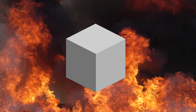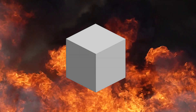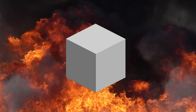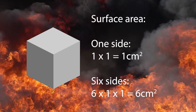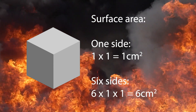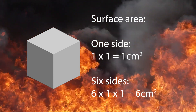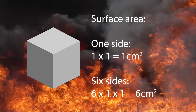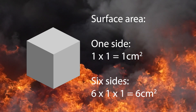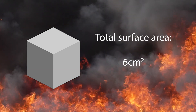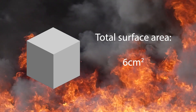To talk about the surface area to volume ratio, we first need to know what it is and how it works. We're going to start with a small cube and work out what the surface area is and what its volume is. Starting with a 1cm cube, we go 1 by 1 which equals 1cm squared, and that gives us one side of the cube. We then multiply that by 6 because there are 6 sides to a cube.